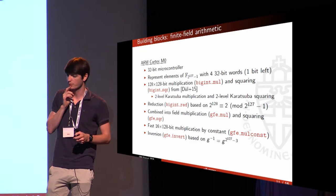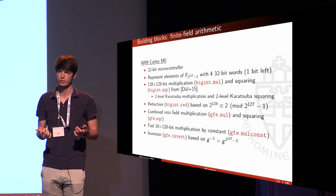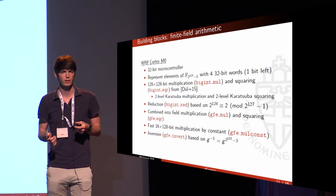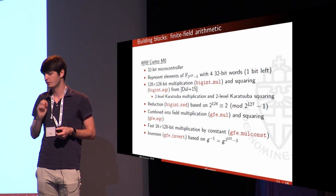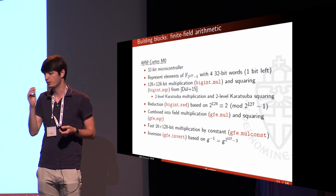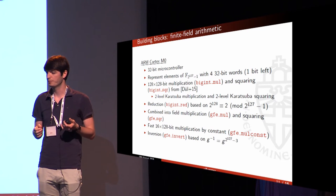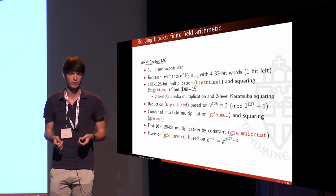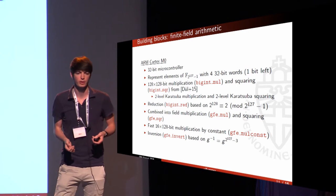The second platform is the ARM Cortex-M0, a 32-bit microcontroller. We represent field elements using four 32-bit words with one bit of redundancy, which makes additions and subtractions easier. We reuse a 256×256-bit multiplication implementation by Dull et al. that uses three-level Karatsuba multiplication and squaring, lifting out their 128×128-bit routines, leaving us with two-level Karatsuba multiplication and two-level Karatsuba squaring. Reduction, multiplication by constant, and inversion are done in the same way as the AVR.